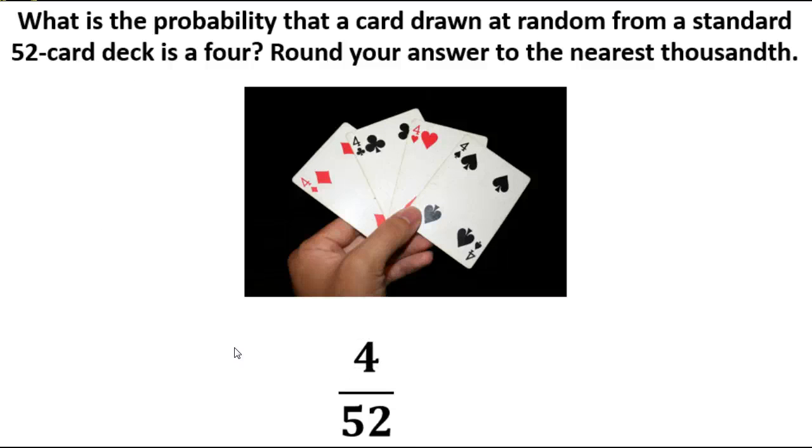Now we can simplify this. 4 over 52 is really 1 over 13. Now, this one didn't ask us to leave it in fraction form. It asked us to round it to the nearest thousandth.